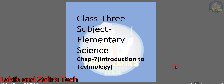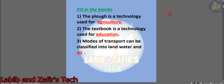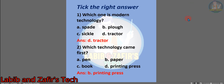First we have filling the blanks. Number one: the plough is a technology used for agriculture. Number two: the textbook is a technology used for education. Number three: modes of transport can be classified into land, water, and air. These are the filling the blanks answers.